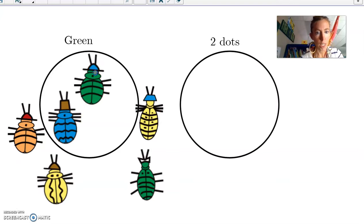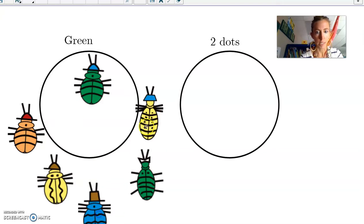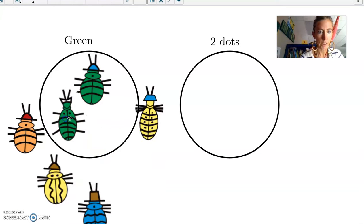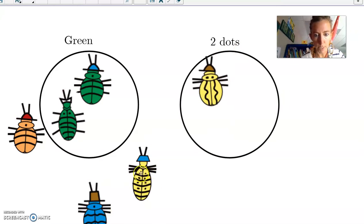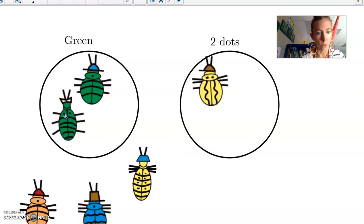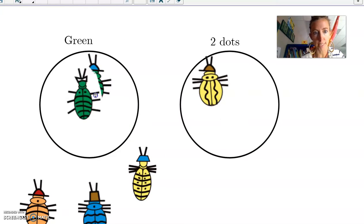So I'm gonna go, okay, green, blue, get out of there, green. And now I need to find beetles with two dots. That one has one, this one has two, this one has one, that one has way too many. And I look at my green ones, this one has two, uh-oh, this one has two dots and it's green.